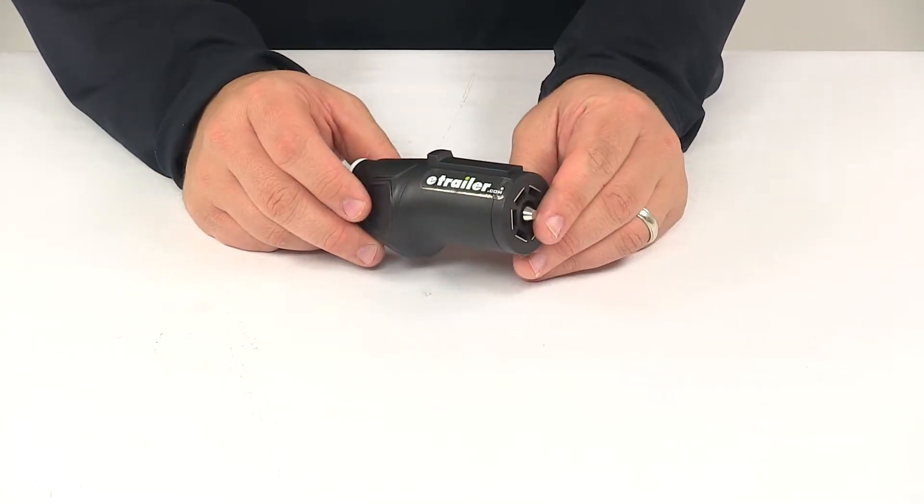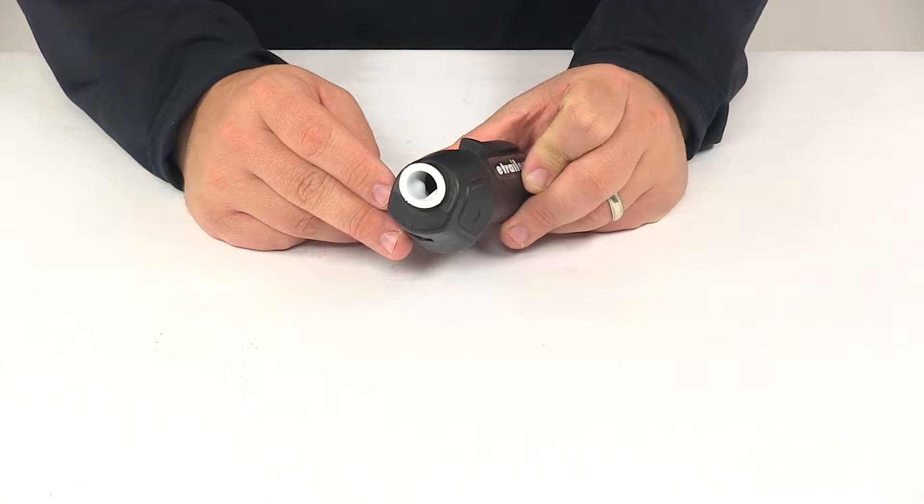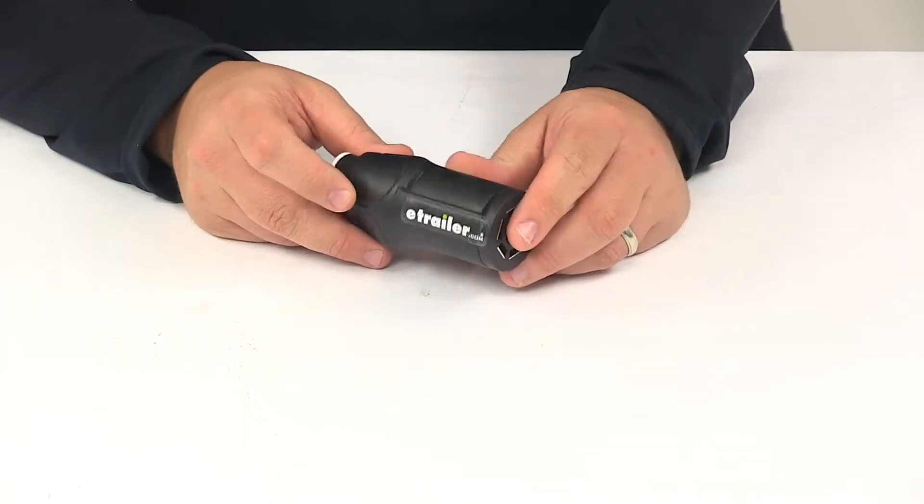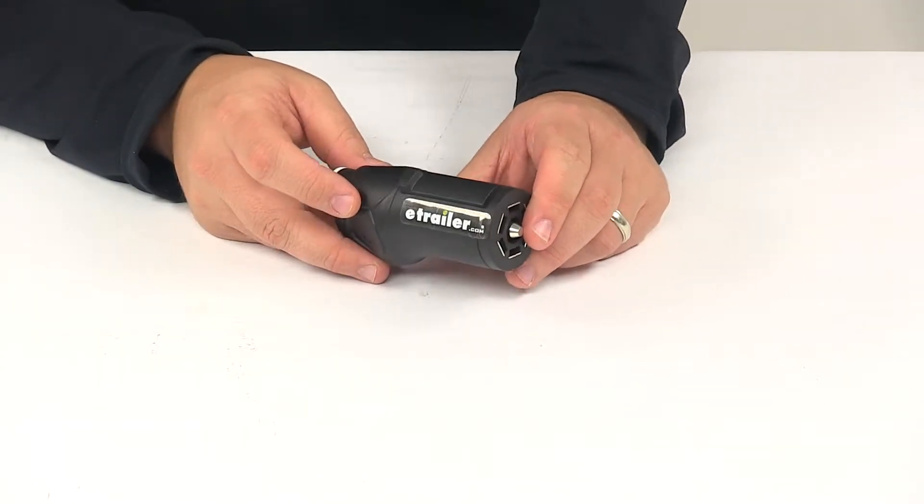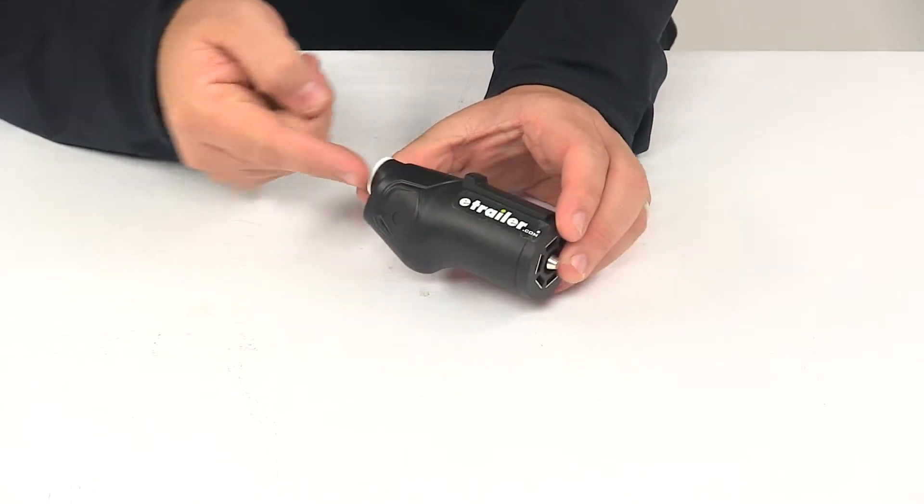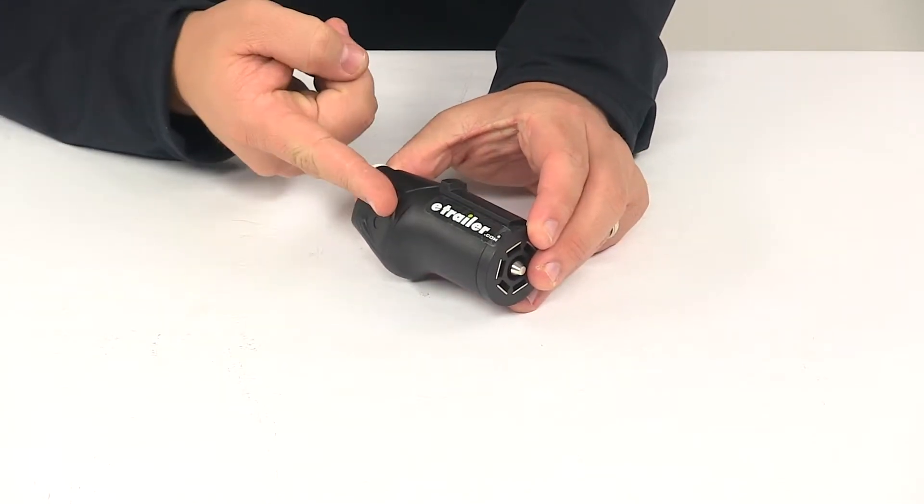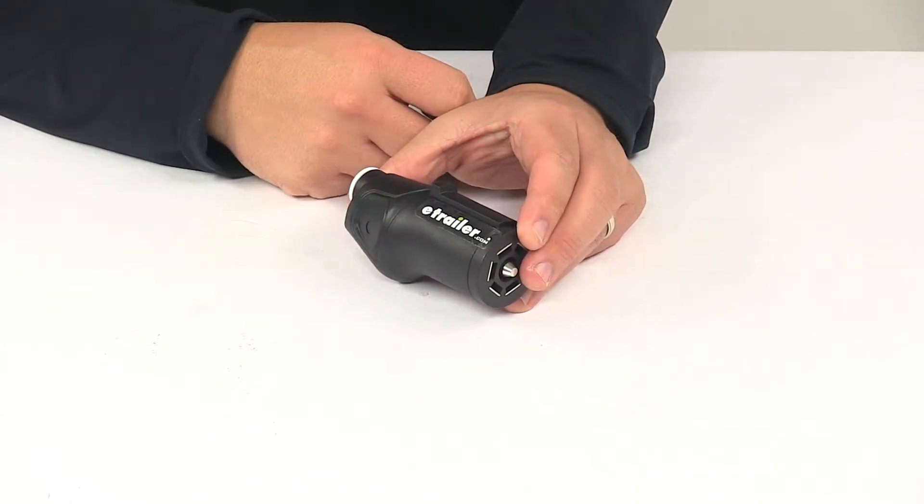Today we're taking a look at the Curt 7-way RV style trailer connector for the trailer end. This 7-way RV style trailer end connector would hard wire to your trailer's wiring and then plug into the 7-way on your vehicle.